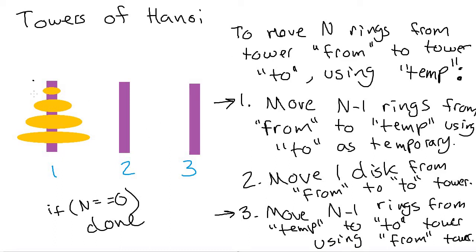The base case is: if n equals zero, we're done — if we don't actually have any rings to move, we just return out of this method. This happens when we get to the very top ring: step one asks to move the rings above it, there are none so it returns immediately; we move the one disk; step three again finds no rings to move and returns. So the base case triggers whenever the number of rings to move is zero.